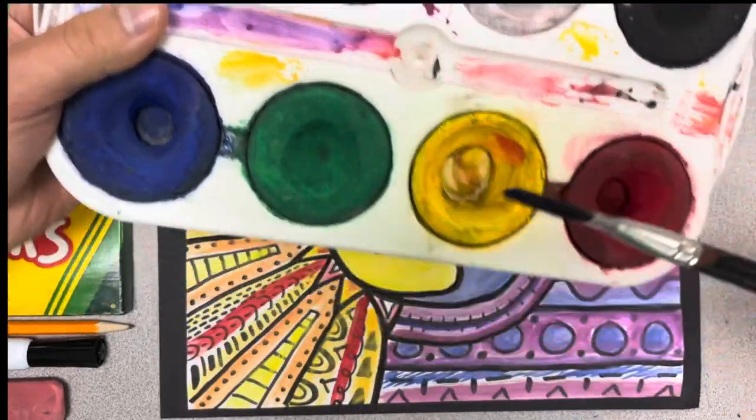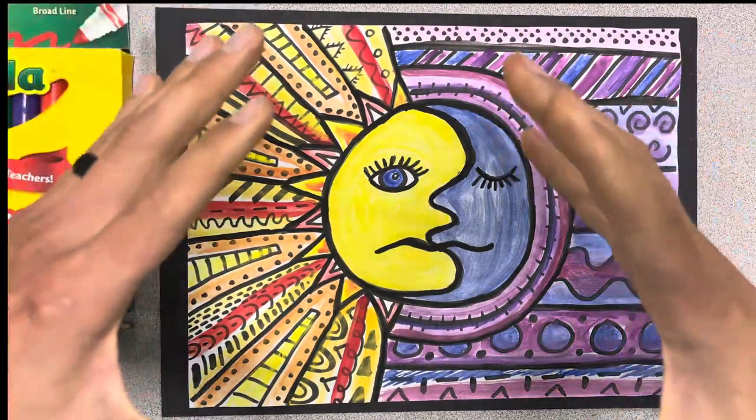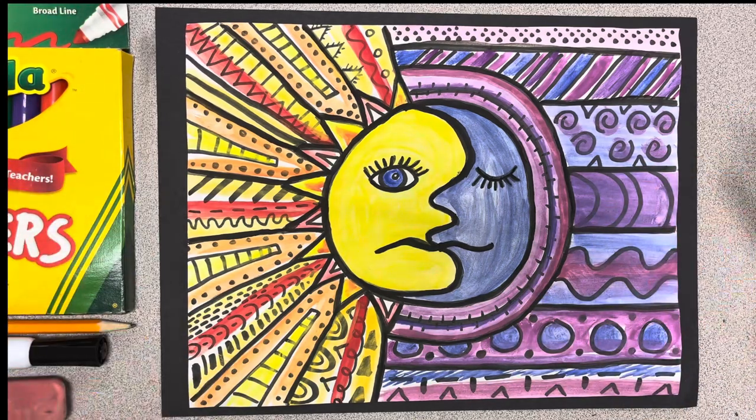I use my tempera cakes for this with a paintbrush to try to really get those bright colors, but you could definitely use markers, crayons, color pencils, anything.